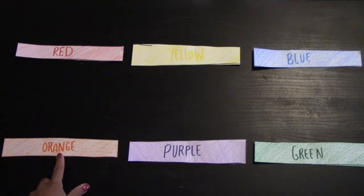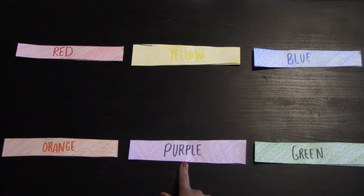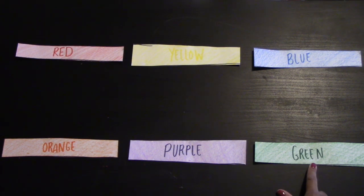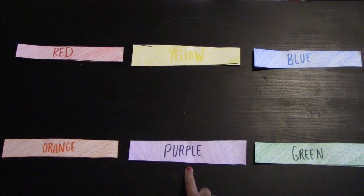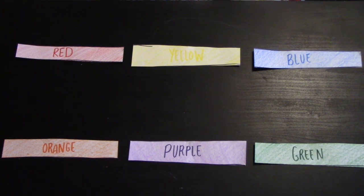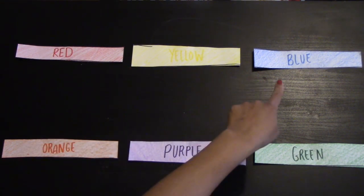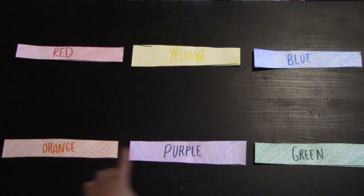Our secondary colors are orange, purple, and green. Those colors make these colors.